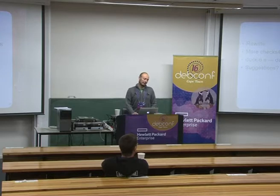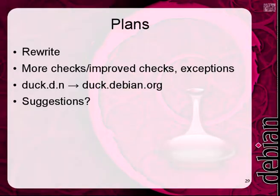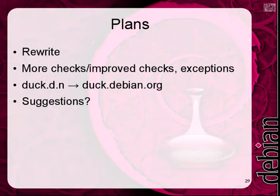The plans for the whole thing: currently it's a bit of a hack on top of a hack, because it just got more and more features, so I will clearly rewrite this probably this year. I'm also planning to do more checks, improve existing checks, and add some exceptions for some very fancy websites that make my regular expression detection go crazy. I'm currently running duck on duck.debian.net and planning to migrate to duck.debian.org. If there are any suggestions as to what else might be worth checking, please drop me a line.